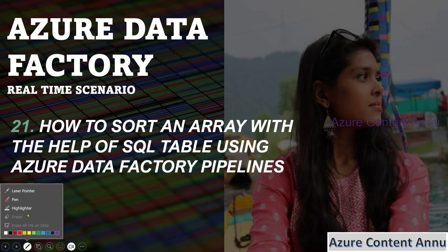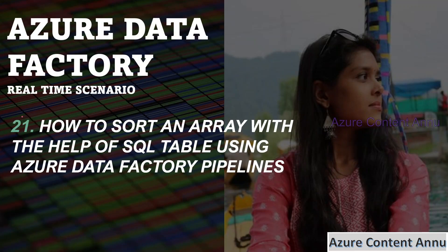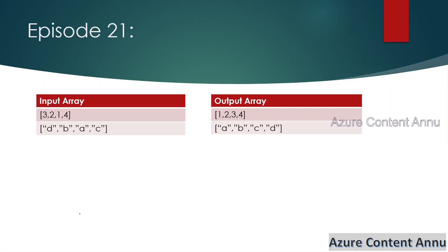Hi friends, welcome to Azure Content. This is part 21 in the Azure Data Factory real-time scenarios playlist. In this video we are going to learn how to sort an array with the help of a SQL table using Azure Data Factory pipelines. This is the same requirement we achieved in part 20 of this playlist, where we wanted to sort an array.